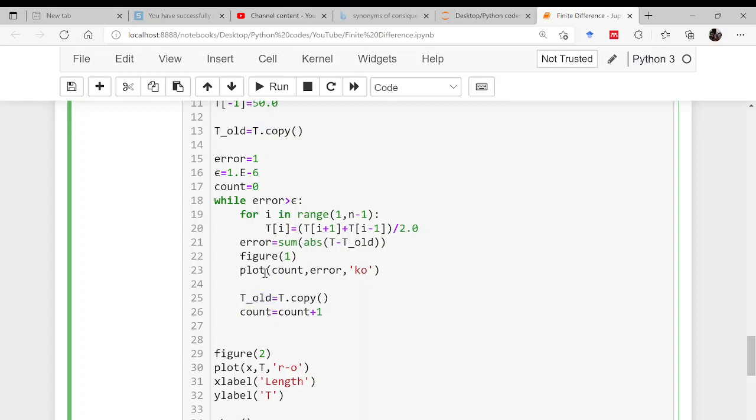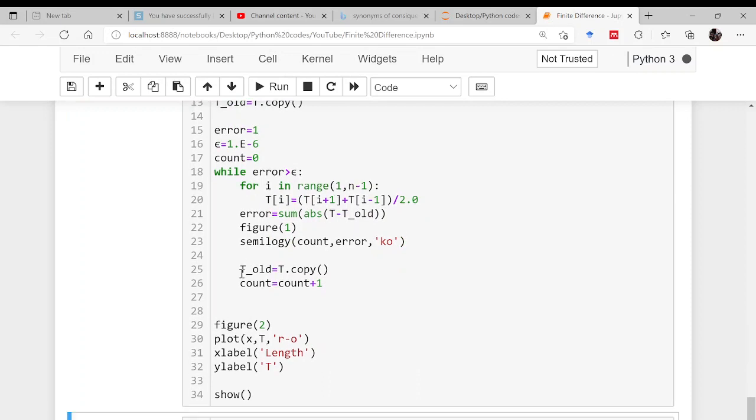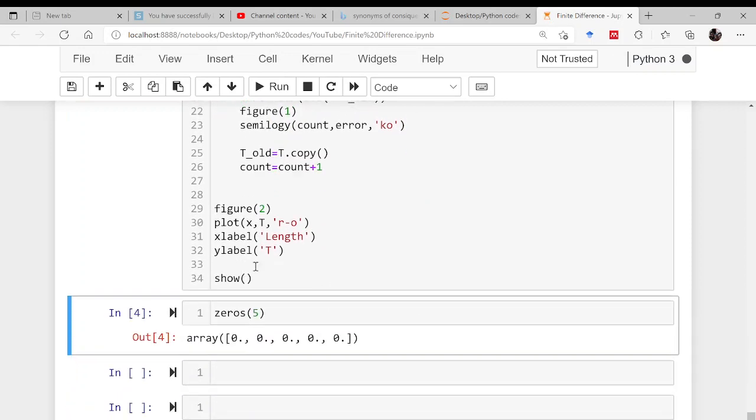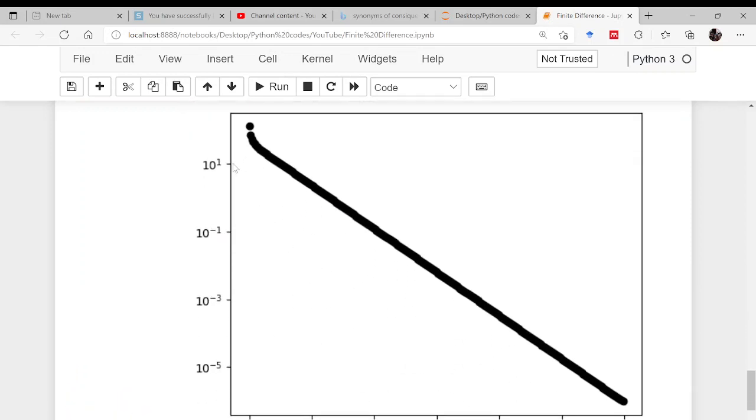Sometimes, some people do what? Instead of plotting this, they plot semilogy, so that you can view the error in a better way, like this.